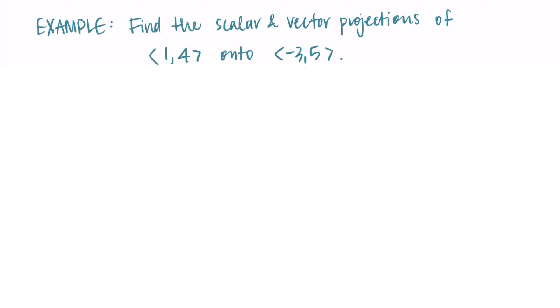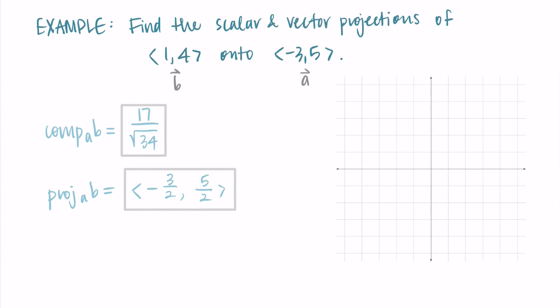Let's graph this to verify. Plotting a = (-3, 5) and b = (1, 4), the projection of b onto a goes to (-1.5, 2.5), pointing in the same direction as a. Dropping a vertical line from b onto a confirms we have the right magnitude and location for the projection. That gives me confidence the answer is correct. Those are the scalar projection √34/2 and vector projection (-3/2, 5/2) of (1, 4) onto (-3, 5). Thanks for watching!